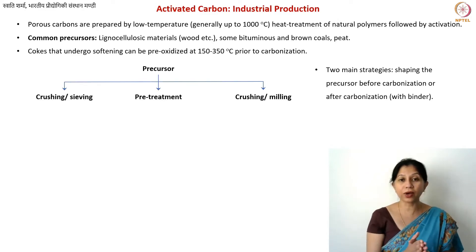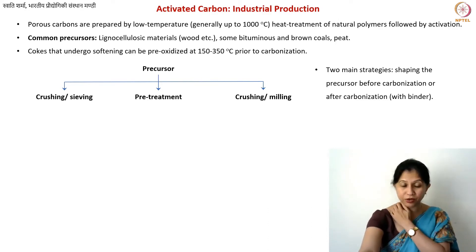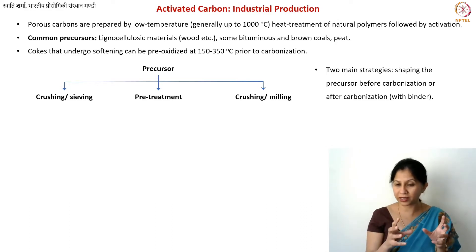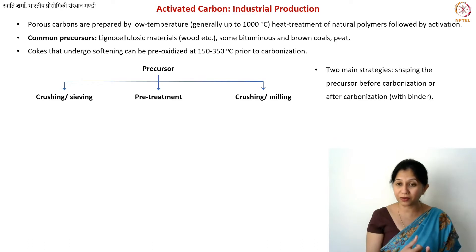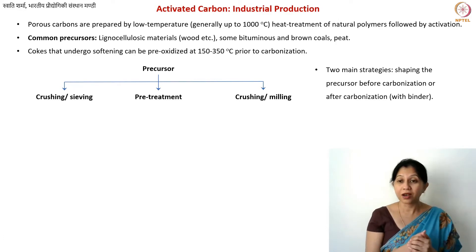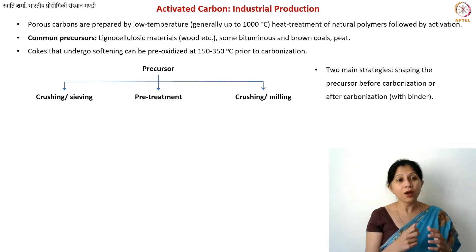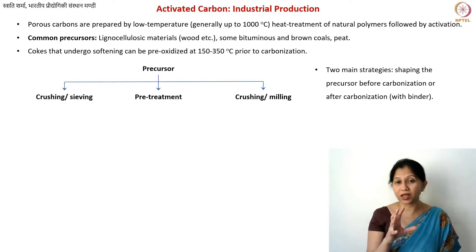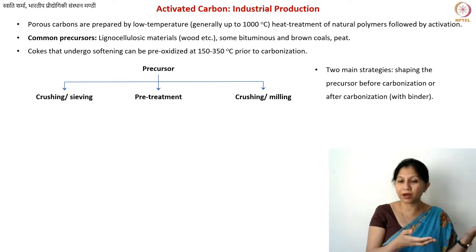You take a polymer precursor, and if you want to make pellets — let's say from wood — you first need to dry it, then crush it, and make uniform particles. You may also need to do sieving. For example, coconut shell in India is often used for making activated carbon, which gives very good quality. You do crushing and sieving to remove large particles and make the size uniform. For bigger particles, you might do milling to reduce the particle size.